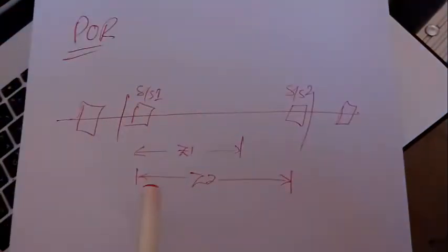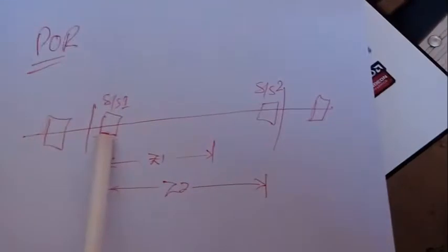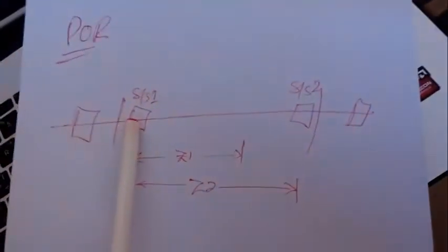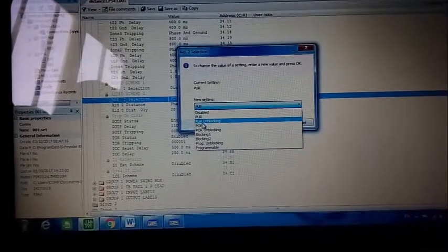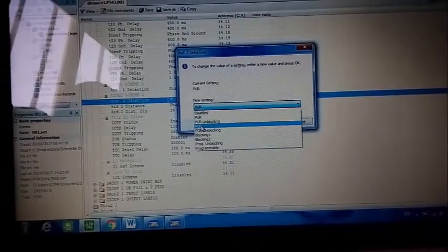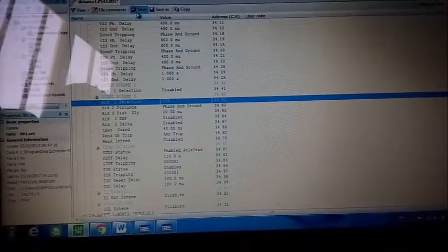The next scheme is the Permissive Overreach scheme. In this scheme, if the fault is in zone one or zone two, it will send a carrier receive signal to the other substation to make a trip. We go to settings, enable the Permissive Overreach scheme, and save.